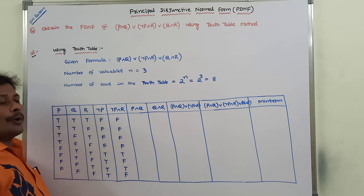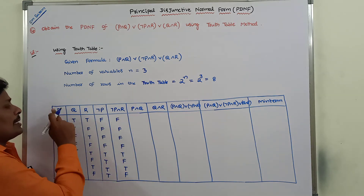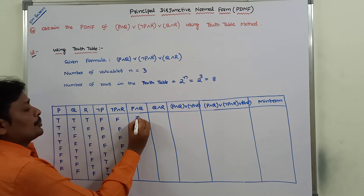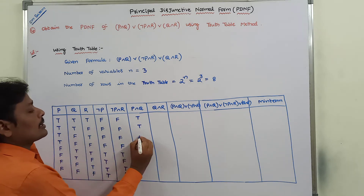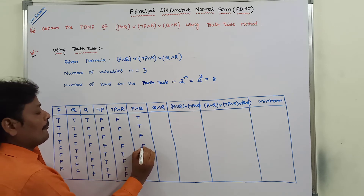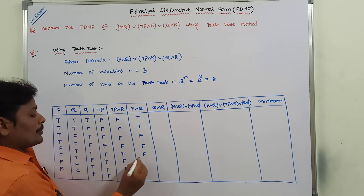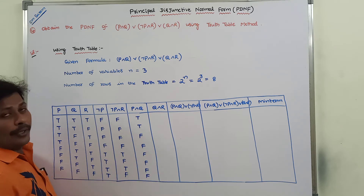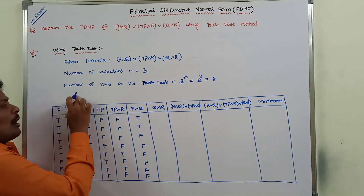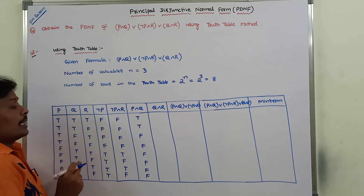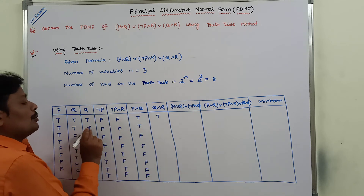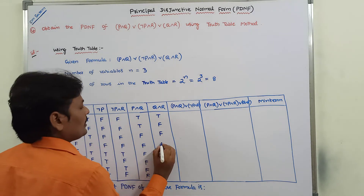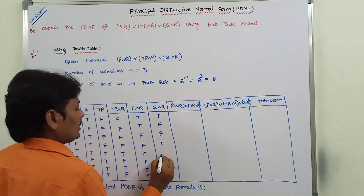Next, for P∧Q, we combine the P column and Q column using the AND connective. The resulting values are: true, true, false, false, false, false, false, false. Next, for Q∧R, we combine the Q column and R column using the AND connective. The resulting values are: true, false, false, false, true, false, false, false.